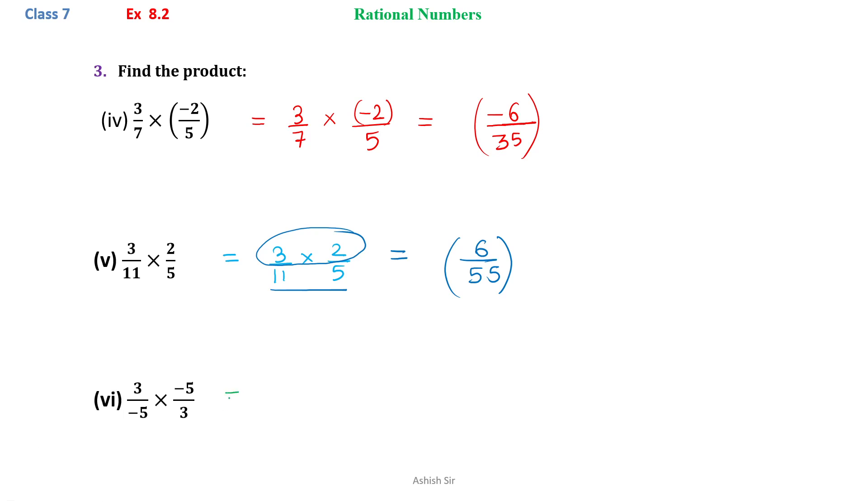Moving on to the next one, we see we have 3 by minus 5, multiply minus 5 divide by 3. So we can see that we can cancel 3 with 3, minus 5 with minus 5, so we will have answer is 1.